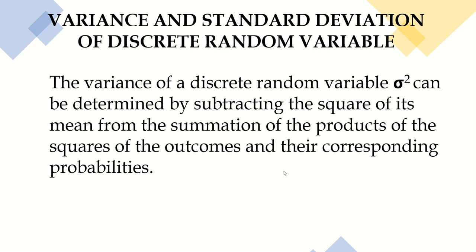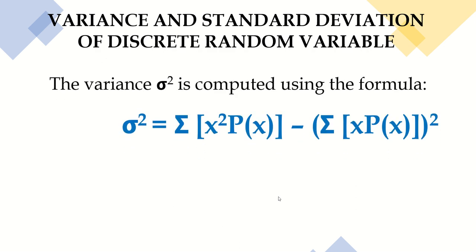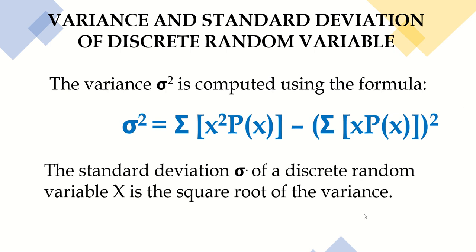How about the variance and standard deviation of a discrete random variable? The variance can be determined by subtracting the square of its mean from the summation of the products of the squares of the outcomes and their corresponding probabilities. The variance is computed using the formula: variance = Σx²·P(x) − (Σx·P(x))². The standard deviation of a discrete random variable X is the square root of the variance.